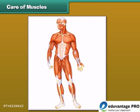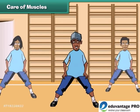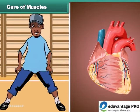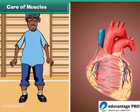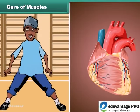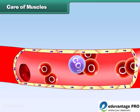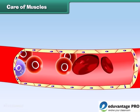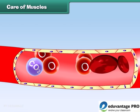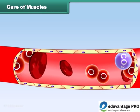For good health, it is important that our muscles are strong and functioning efficiently. Regular exercise makes our muscles strong. The rate of the heart's action increases during exercise and we breathe faster. As a result, plenty of oxygen and nutrients in the blood are supplied to all parts of the body, which makes us feel refreshed and lively.